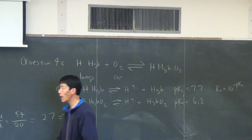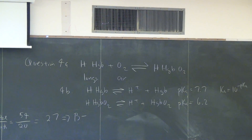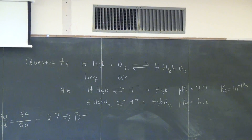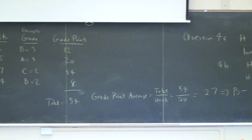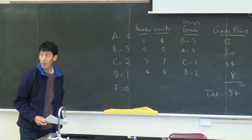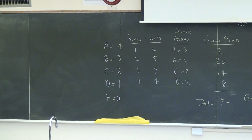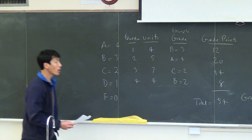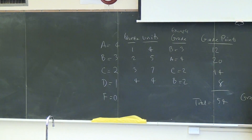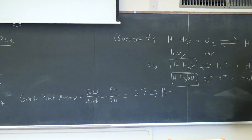Again, lower pKa means stronger acid, or equivalently, higher Ka means stronger acid. For question 4C, two acids and two bases are present in the blood — in other words, these four substances are present in our blood.